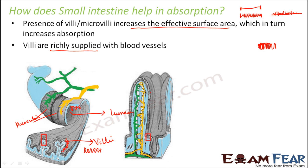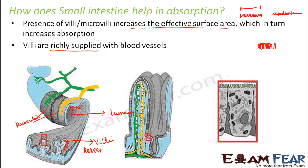This is how absorption actually takes place in the small intestine. You can see the presence of microvilli here. The villi have a lining of microvilli which increases the effective surface area, so absorption increases. The villi are closely associated and richly supplied with blood vessels. Once they absorb nutrients from the food, the nutrients are passed on to the blood vessels, and then the blood vessels carry the nutrients to different parts of the body.